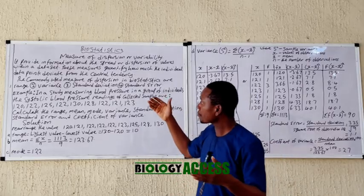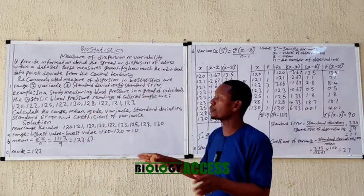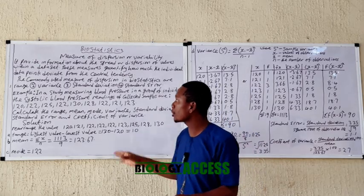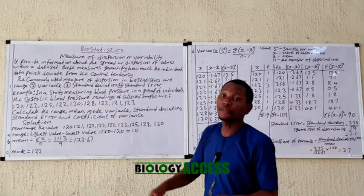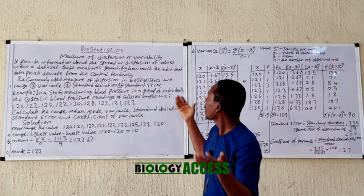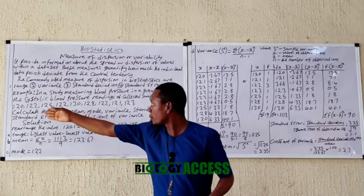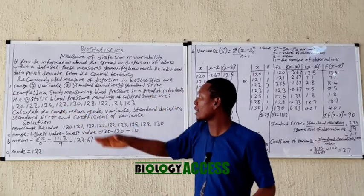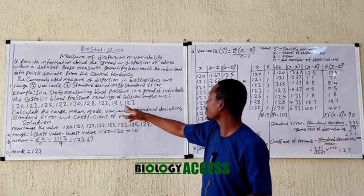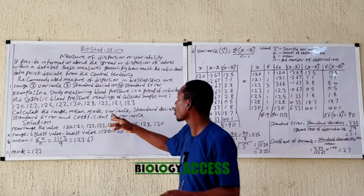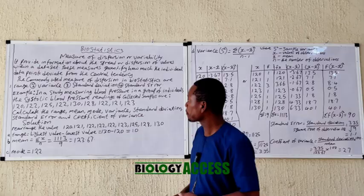We'll look at a typical example using a simple set of data. In example one, assuming a study measuring the blood pressure of individuals, the systolic blood pressure readings of collected samples are given. You are asked to calculate the range, mean, mode, variance, standard deviation, standard error, as well as the coefficient of variation.